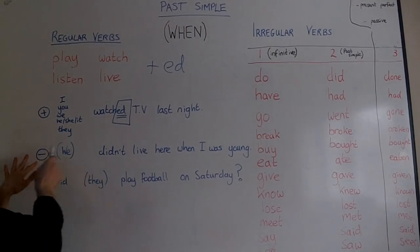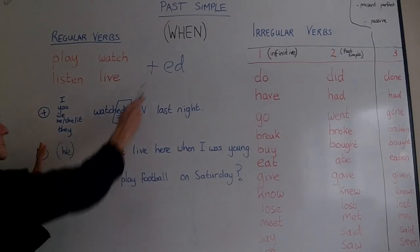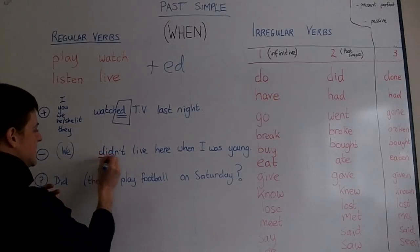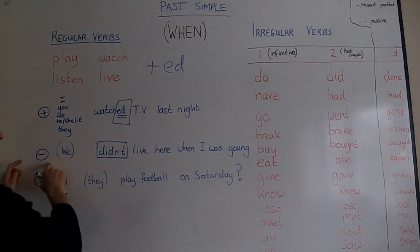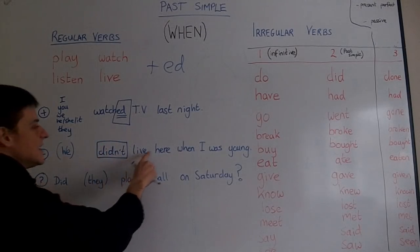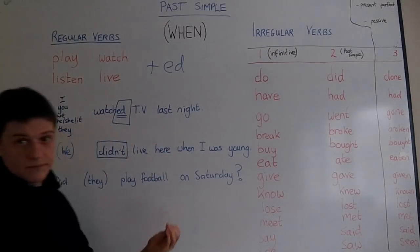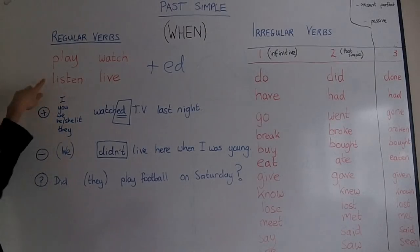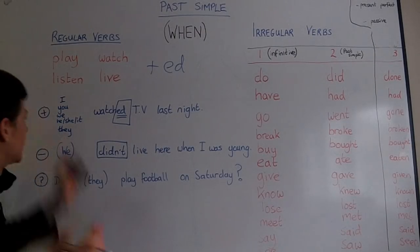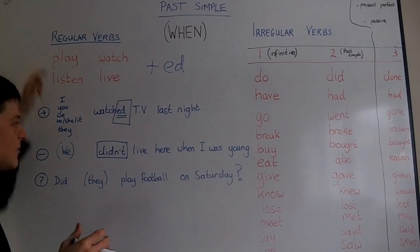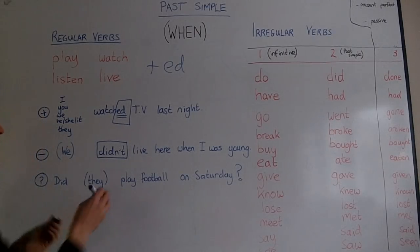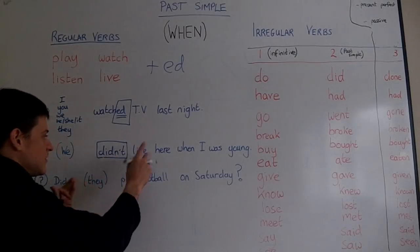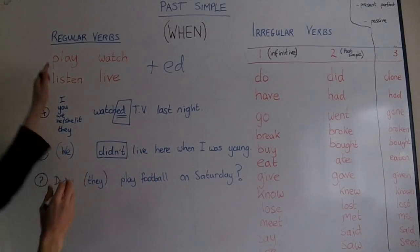If we want to make something negative, we don't add ED. We just use 'didn't'. For negative ones: we didn't live here when I was young. I didn't listen to music yesterday. I didn't play with my friends yesterday. Didn't play, didn't live, didn't watch — no ED. We just use didn't and the infinitive.